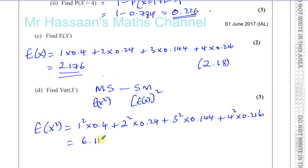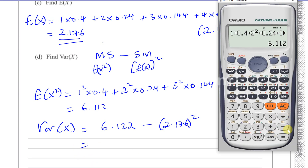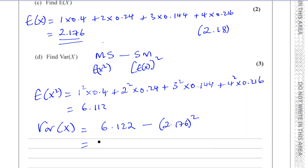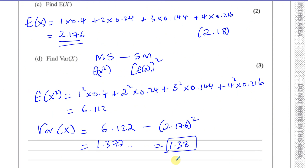Therefore our variance is the mean of the squares minus the square of the mean: 6.112 minus 2.176 squared, which gives us 1.377 to 3 significant figures — so 1.38. And that's your answer to part C. Parts D and E I'll do in the next video, just to keep this from going too long.